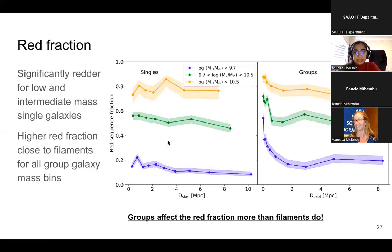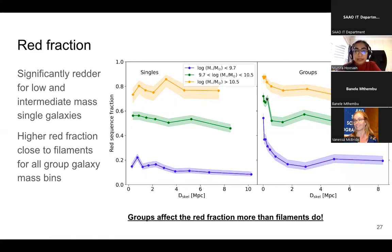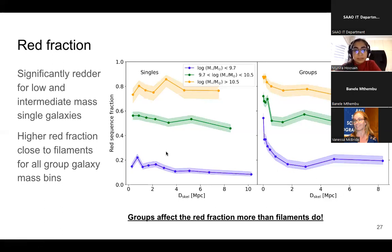I then looked at the red fraction, and you can see quite dramatically the effect of groups on galaxy color. The groups are primarily at very low distance to filaments, so the color in groups increases really strongly close to filaments due to group pre-processing effects. However, we do find that single galaxies are still slightly redder in the low and intermediate mass samples, showing that groups affect the red fraction more than filaments do but filaments do still have a small effect.